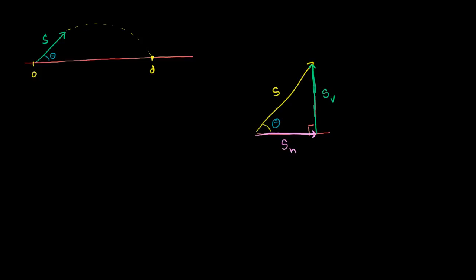We can write down SOHCAHTOA. This tells us that sine is opposite over hypotenuse, cosine is adjacent over hypotenuse, and tangent is opposite over adjacent. We're assuming we know theta and we know s, and we want to figure out what the vertical and the horizontal components are.